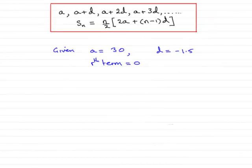In this part of the question, we're told that the sum of the first n terms of the sequence is Sn, and we're asked to find the largest positive value of Sn.